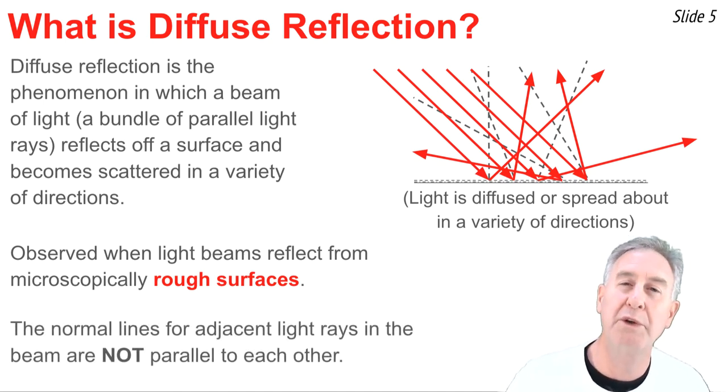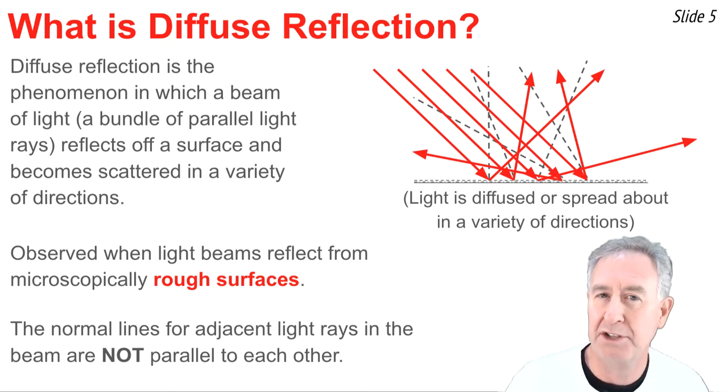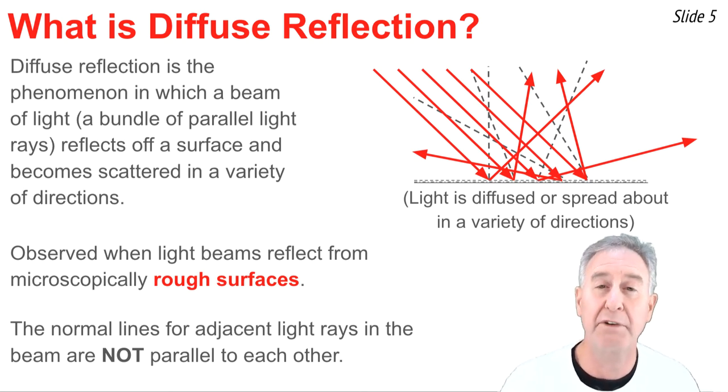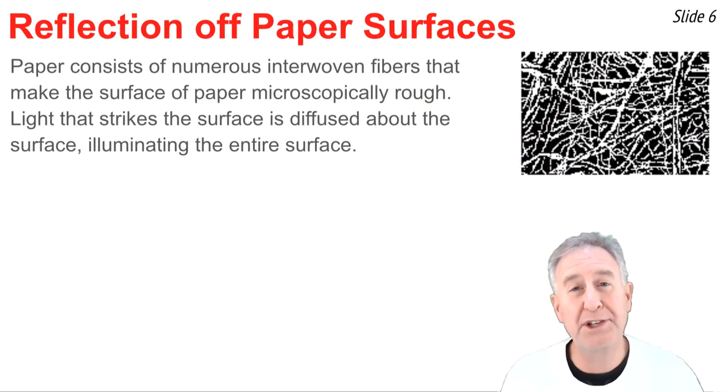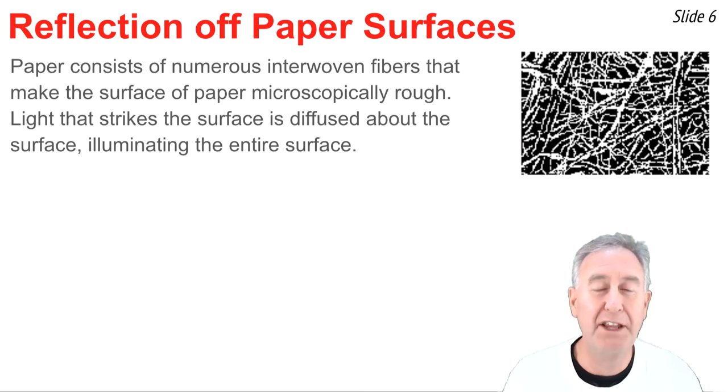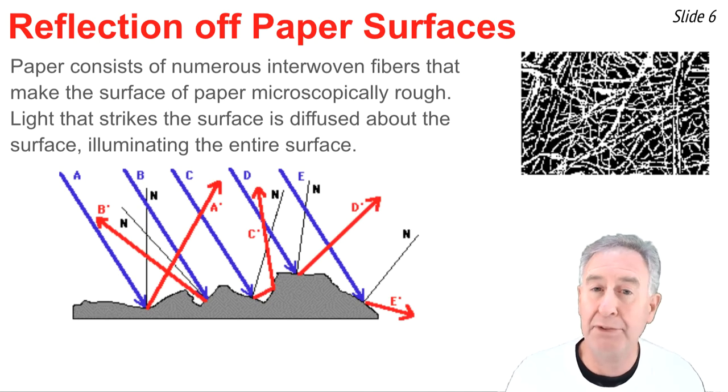And when this occurs, we would note that each individual light ray strikes the surface and the normal line for that light ray is at a different orientation than its neighboring light ray. The picture above represents a sheet of paper magnified 50,000 times. You'll notice it consists of interwoven cellulose fibers that give it a microscopically rough texture. A beam of light striking the surface is scattered about the surface, illuminating the entire surface.